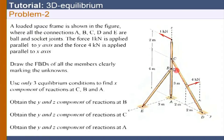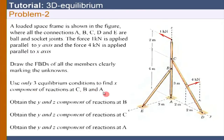All are ball-and-socket joints at A, B, C, D, and E. The first thing we should do is get the free body diagrams of all the members — that is important. We are asked to use only 3 equilibrium conditions to find the x-components of reactions at C, B, and A.